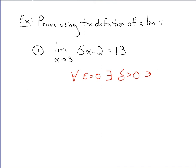When we set these up, we start with the absolute value of x minus the value that x is approaching. So in this case, x is approaching 3.